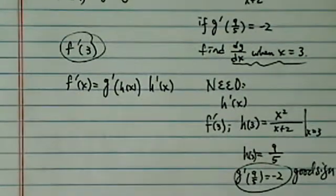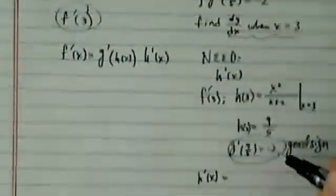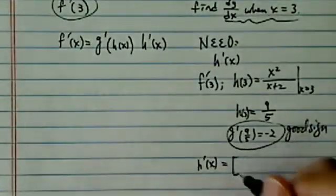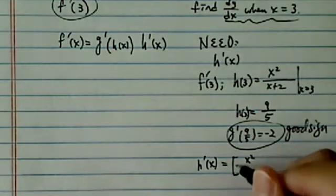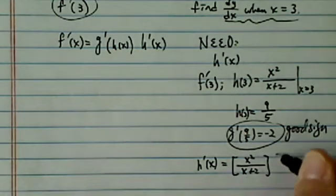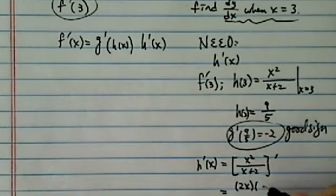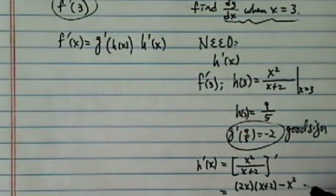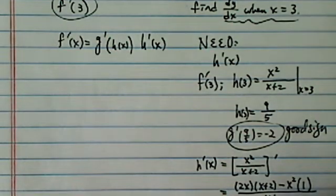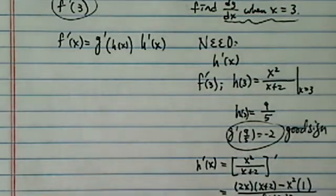They did give what we need to do. So second thing, let's find out what h prime of x is. We're going to use x squared over x plus 2, derivative. So derivative of the first one, which is 2x, times second one leave it alone, minus leave the first one alone, derivative of the second one. x plus 2, the whole thing squared.